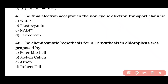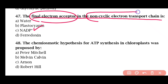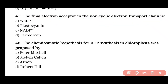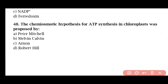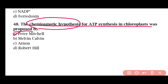Question 47: The final electron acceptor in the non-cyclic electron transport chain is — water, plastocyanin, NADP+, or ferredoxin. The correct answer is option C: NADP+ is the final electron acceptor in the non-cyclic electron transport chain. Question 48: The chemiosmotic hypothesis for ATP synthesis in chloroplasts was proposed by — Peter Mitchell, Melvin Calvin, Arnon, or Robert Hill. The correct answer is option A: Peter Mitchell proposed the chemiosmotic hypothesis.